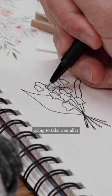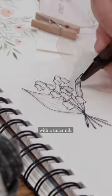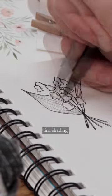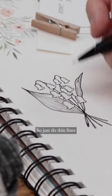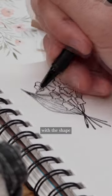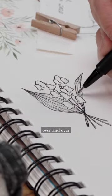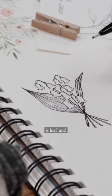Then you're going to take a smaller fine liner, so a pen with a tinier nib, and we're just going to do a little bit of line shading. Just do thin lines that kind of move with the shape of the leaf, and keep going over and over until you really can tell what is leaf and what is flower.